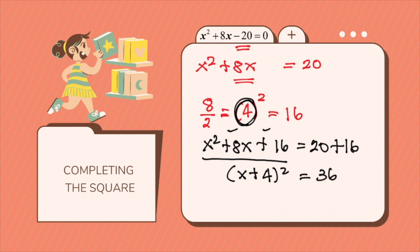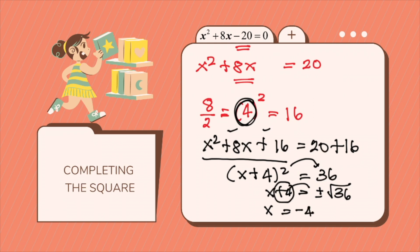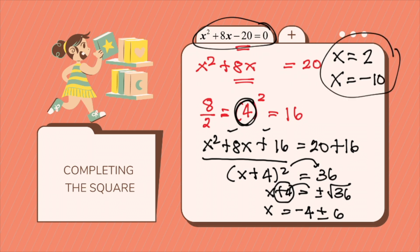Then you solve it by taking the square root. So x plus 4 squared — you move the square to the other side — that would be x plus 4 equals plus or minus the square root of 36. Hence, you transfer positive 4 to the other side, that becomes x equals negative 4 plus or minus 6. Therefore, x squared plus 8x minus 20 gives x equals negative 4 plus 6, which is positive 2, or x equals negative 4 minus 6, which is negative 10. So that will be your answer.